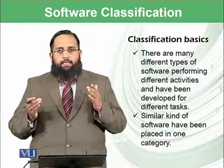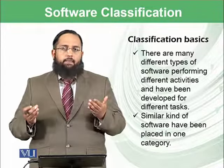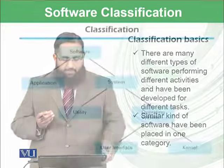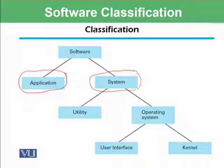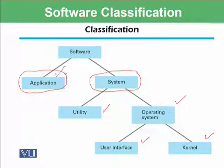However, in computer science, there are many other types of software. So if we want to classify software, it can be classified into application software and system software. Within system software, we have utility and operating system. And within the operating system, we have user interfaces and kernel. Whatever software you have used are examples of application software, while utilities and the operating system fall under system software.